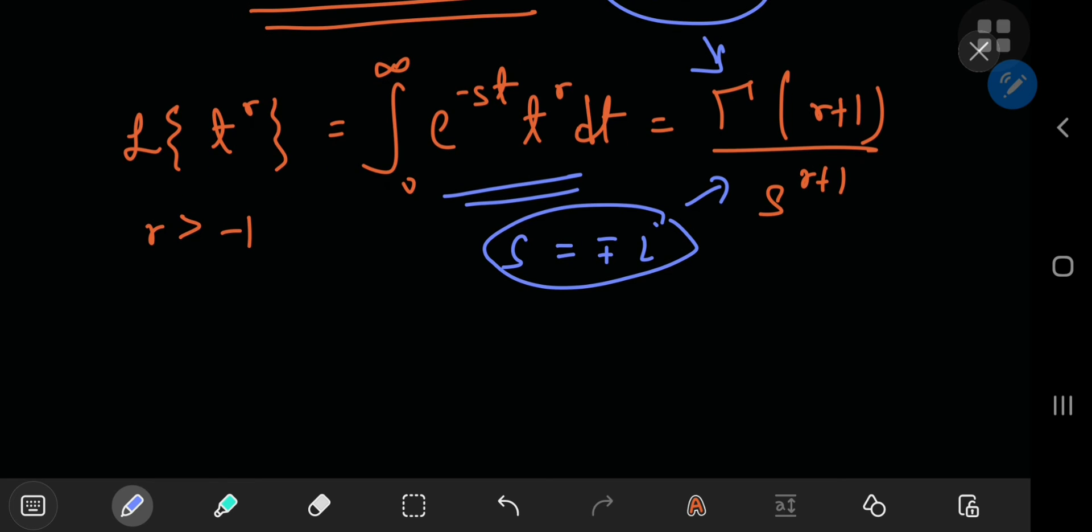So s equals minus plus i in that order. So plugging in this information into the results of the Laplace transform, that means we have i equal to 1 half of the integral from zero to infinity of e to the plus minus i t,